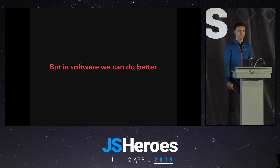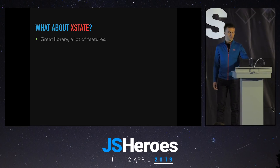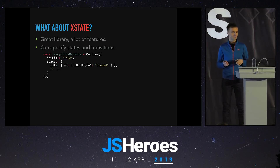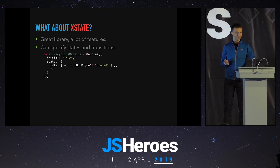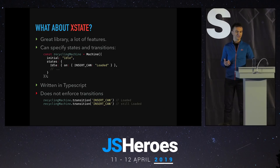Now we are software developers, and we build apps, so we can do better. There are implementations of state machines in JavaScript. The most well-known is XState, which is a great library with a lot of features, and it's widely used. It can specify states and transitions quite easily. You have an initial state and then transitions from one state to the other. It's also written in TypeScript, which is nice because you have some guarantees, but it does not enforce transitions at compile time. So you can still insert the can as many times as you want, and it says loaded.